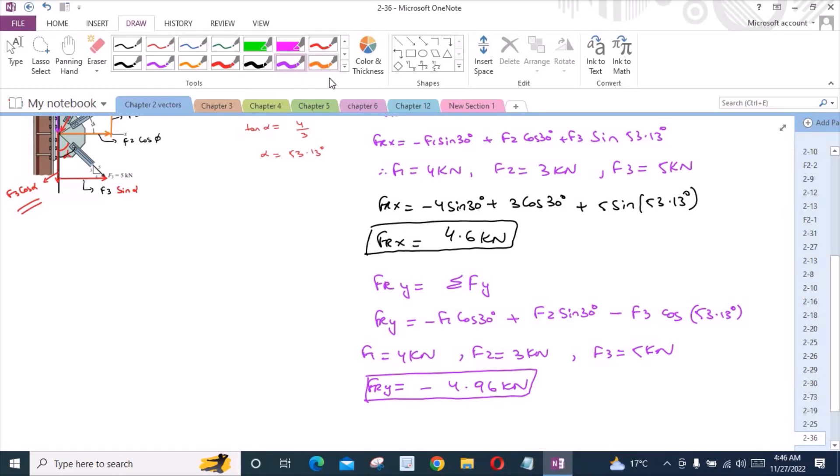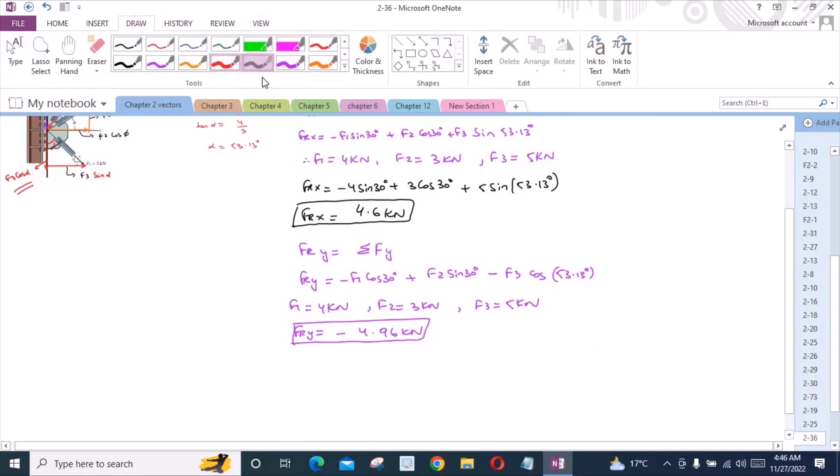Now for the magnitude of the resultant force, FR is equal to square root of FRx squared plus FRy squared, which is square root of 4.6 squared plus negative 4.96 squared, equals 6.76 kN. This is our first answer.